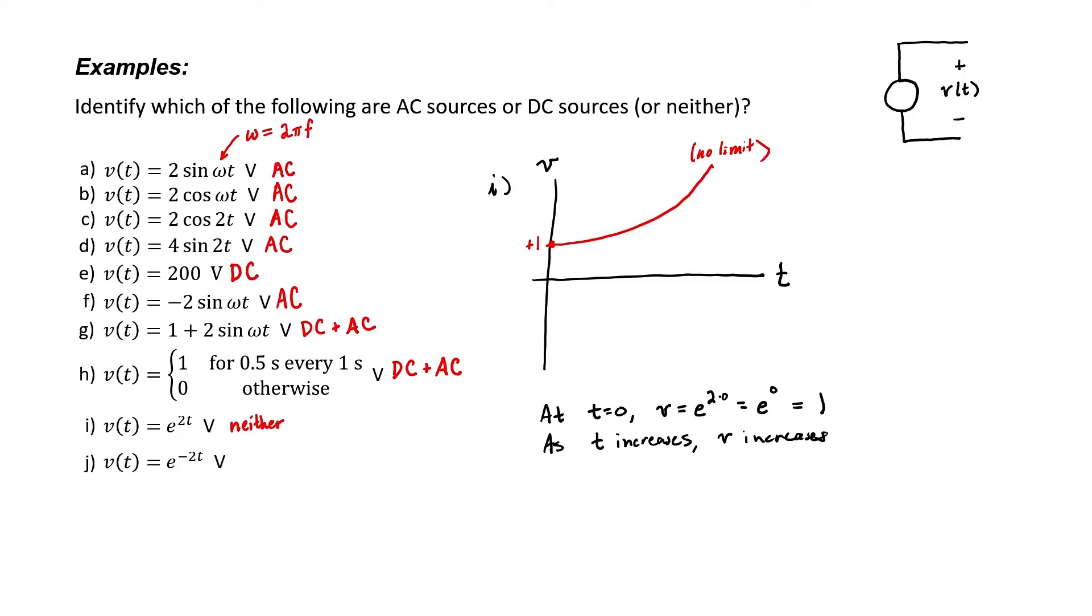It doesn't have a constant average which would be the case of a DC source. And it's not periodic which would be the case of an AC source. Source j on the other hand has a negative sign in the exponent. That means at time t equals zero it's still going to be one volt. But as t increases the voltage is going to go down rather than up. This source is physically allowable because the voltage doesn't increase without bound. But again this is neither an AC nor DC source because it doesn't have exactly a constant offset with respect to time and it's also not periodic.